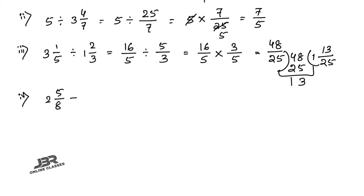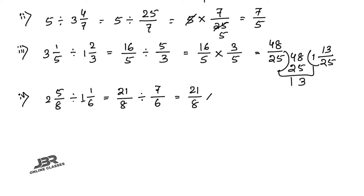Part 4: 2 whole 5/8 divided by 7/6. Convert 2 whole 5/8: 8 × 2 + 5 = 21 by 8. Division by 7/6 becomes multiplication by 6/7. So 21/8 × 6/7: cancel 7 into 21 giving 3, cancel 2 from 6 and 8 giving 3 and 4. Result is 9 by 4. You can also convert this into a mixed fraction.